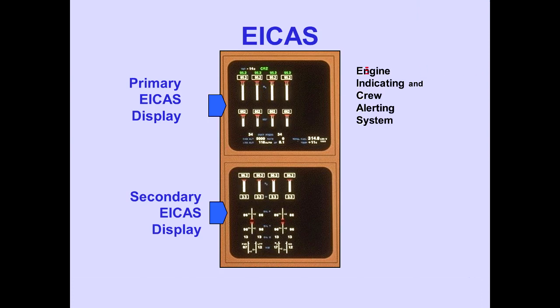An engine indicating and crew alerting system, or EICAS, provides engine and airplane systems indications and crew alerting messages on the primary EICAS display, and additional engine and system indications on the secondary EICAS display.